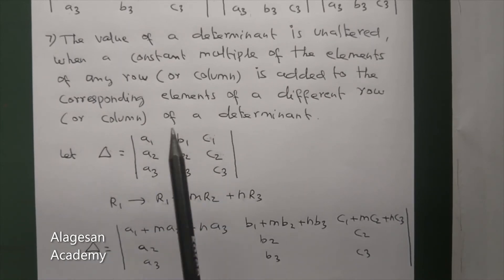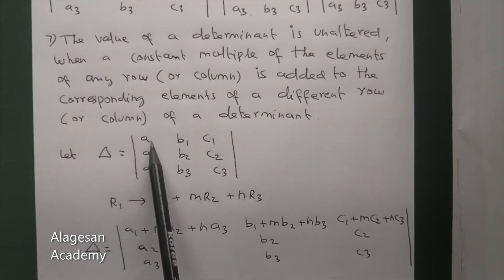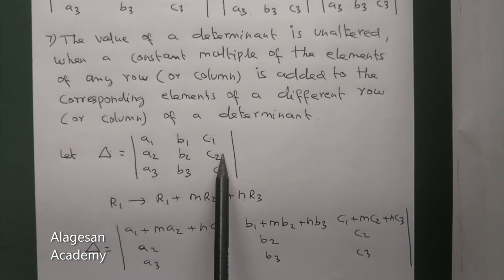Now, how can we change? Take R2 and R3. Then change R1 by adding to it. If you multiply R2 by m, you get ma2, mb2, mc2. If you multiply R3 by n, you get na3, nb3, nc3.